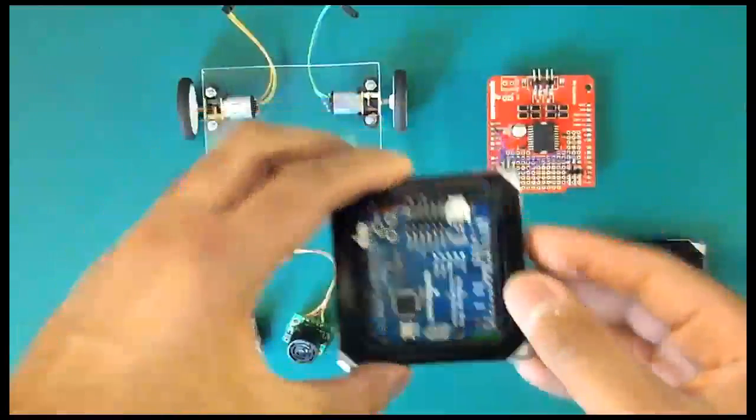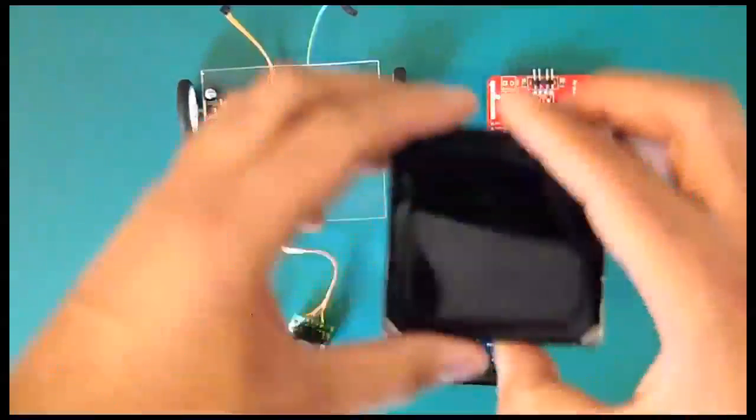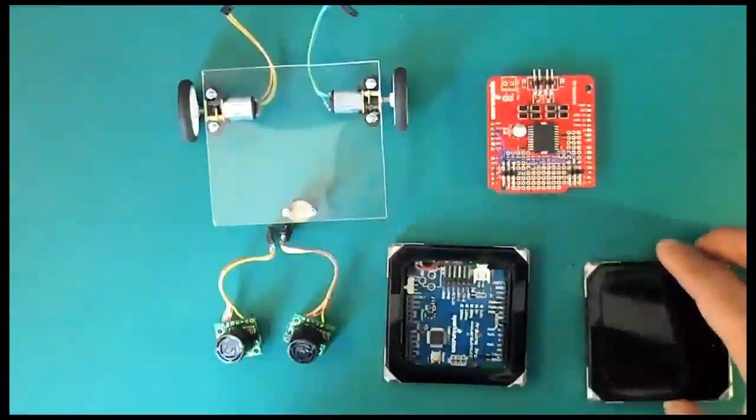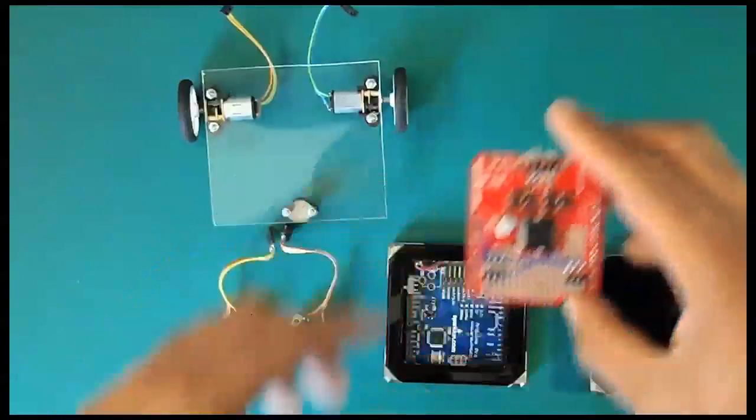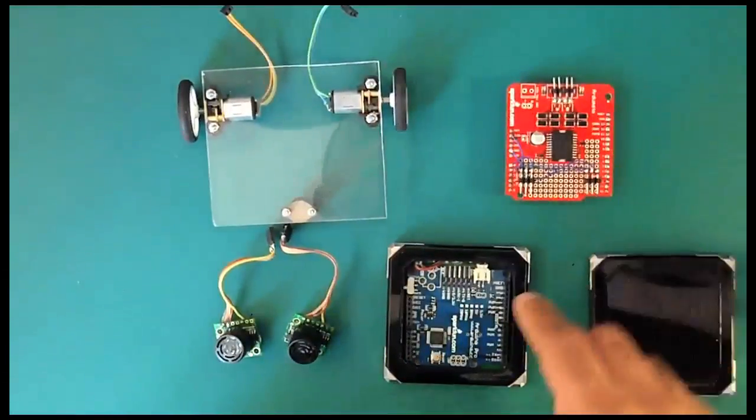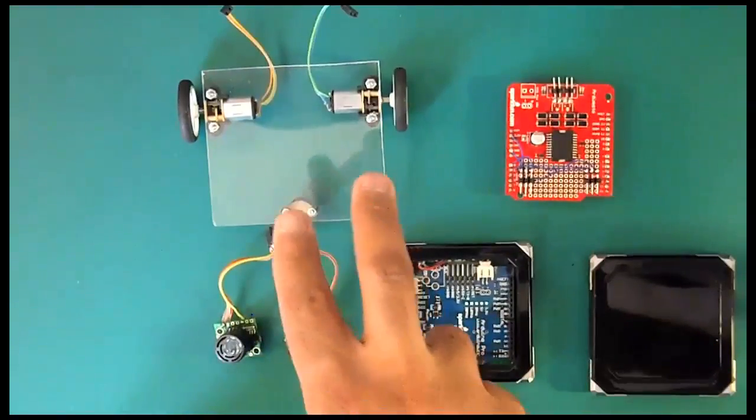This is the Arduino square, the battery square, and finally a motor shield which will plug into the Arduino square and allow the Arduino to control the two DC motors.